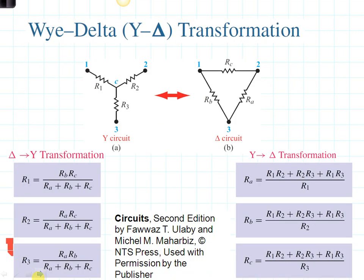Your book has the development of the Y and delta transformations. But here in this table, you can see those specific transformations. Basically, any time you have a Y circuit, that's shown right here, you can convert that into a delta circuit, and vice versa.